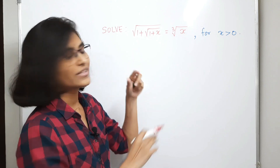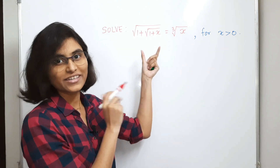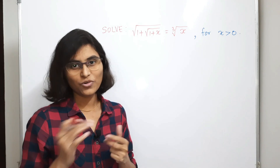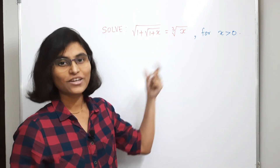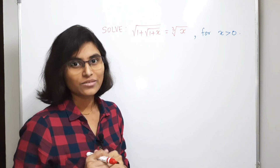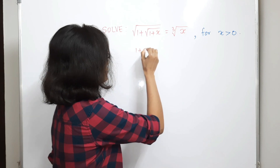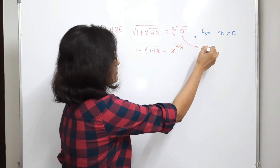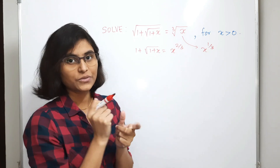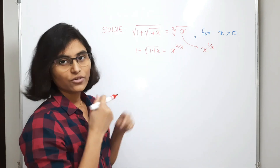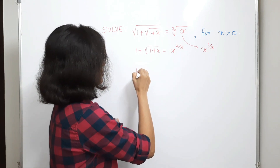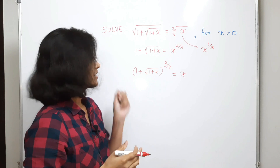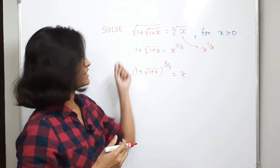If you look at this carefully, this expression contains radical signs. To solve this equation we must get rid of the radical signs. Some of you may think we can square or cube both sides, but if you square both sides we get 1 plus square root of 1 plus x equals x raised to 2 by 3, which is still complicated. And if you take cube on both sides, we get 1 plus square root of 1 plus x, raised to 3 by 2, equals x — but again this is complicated.